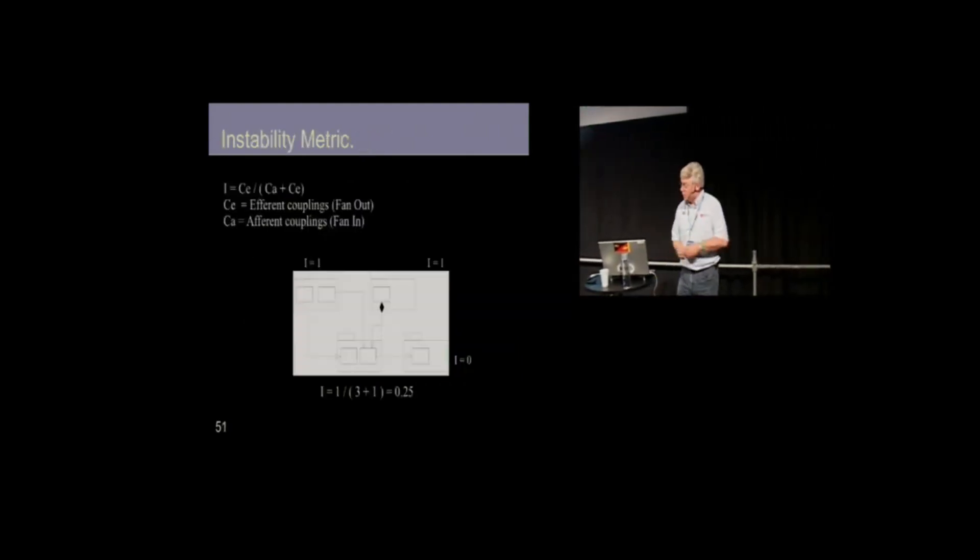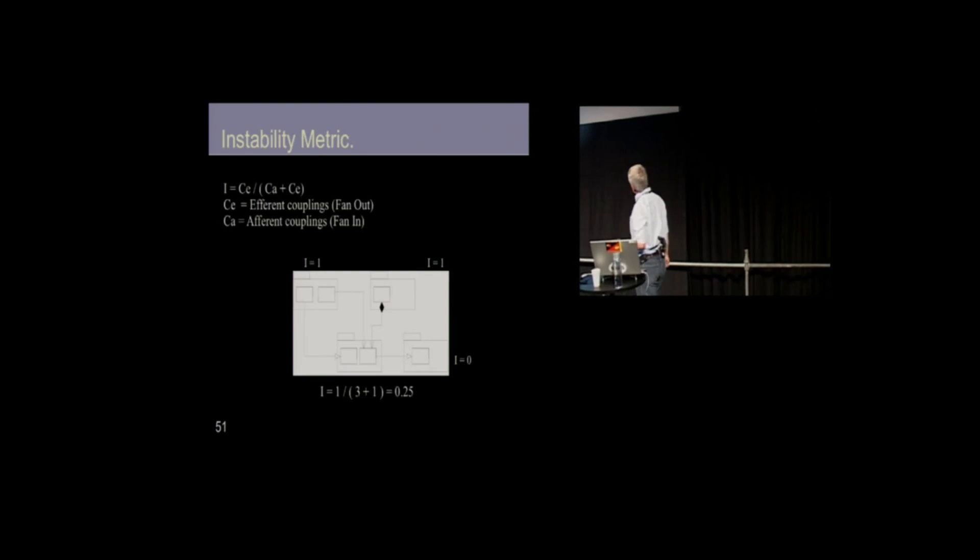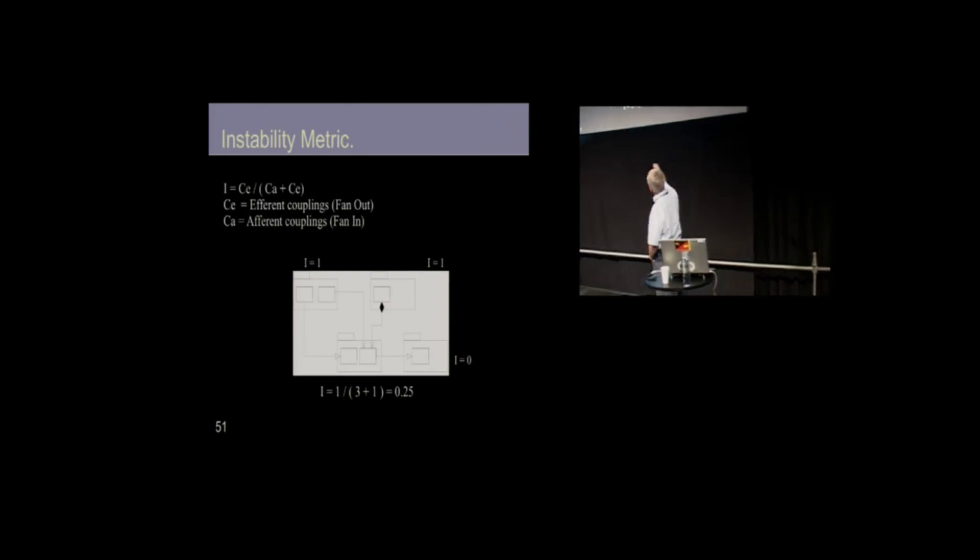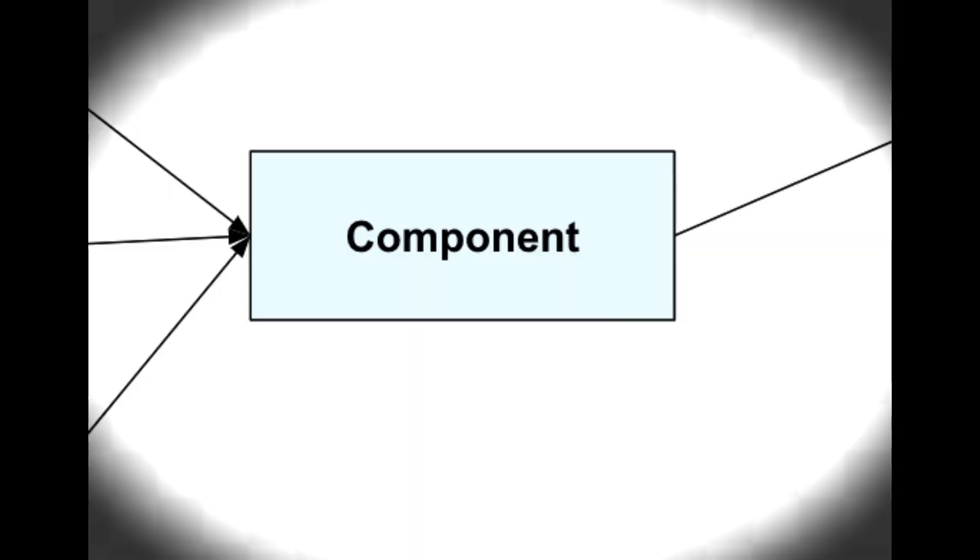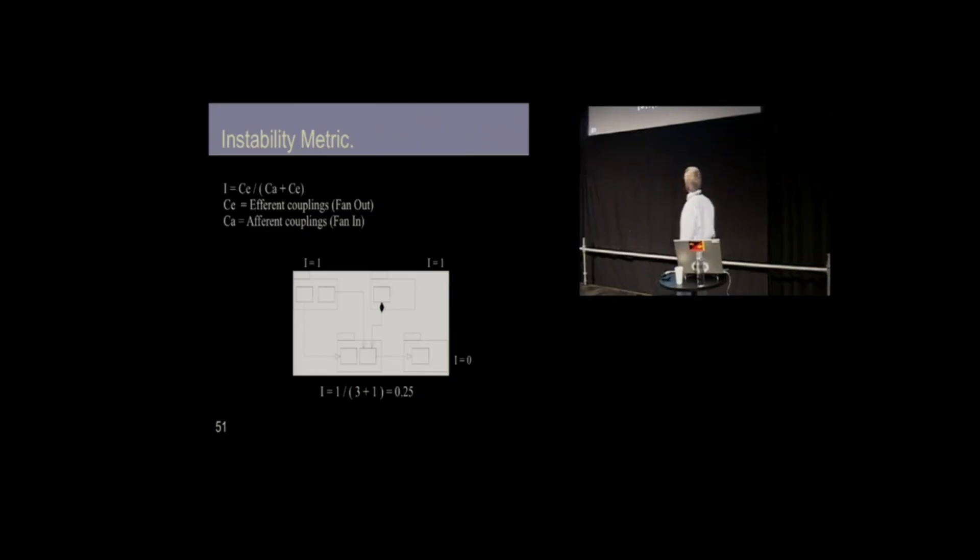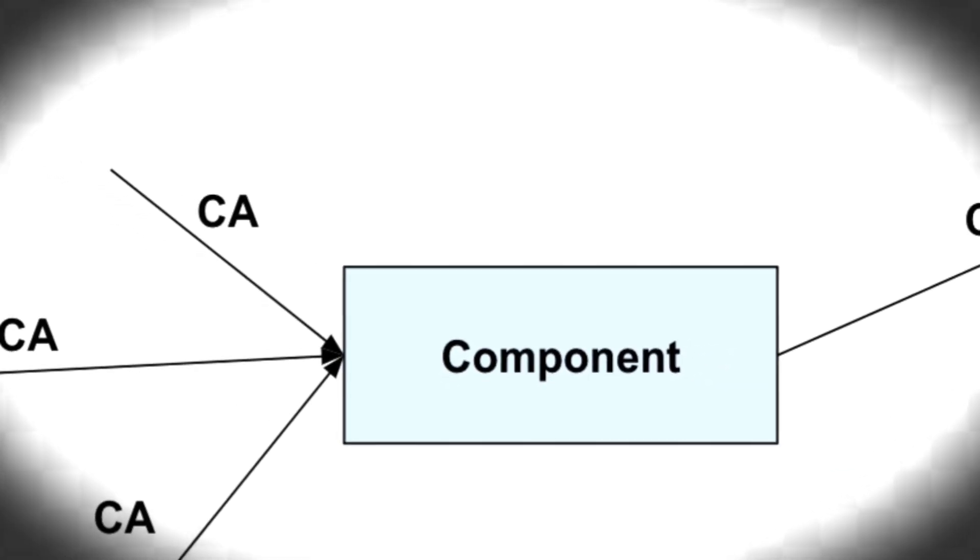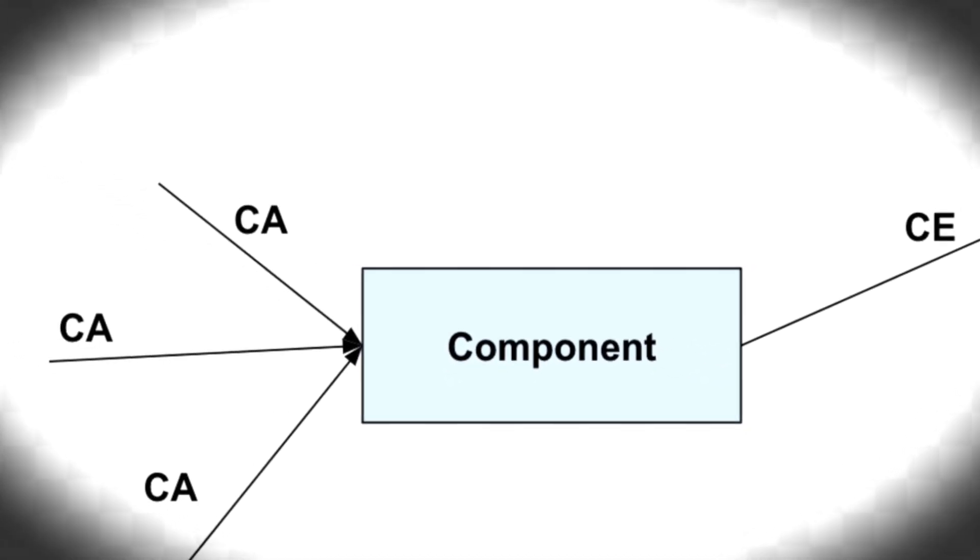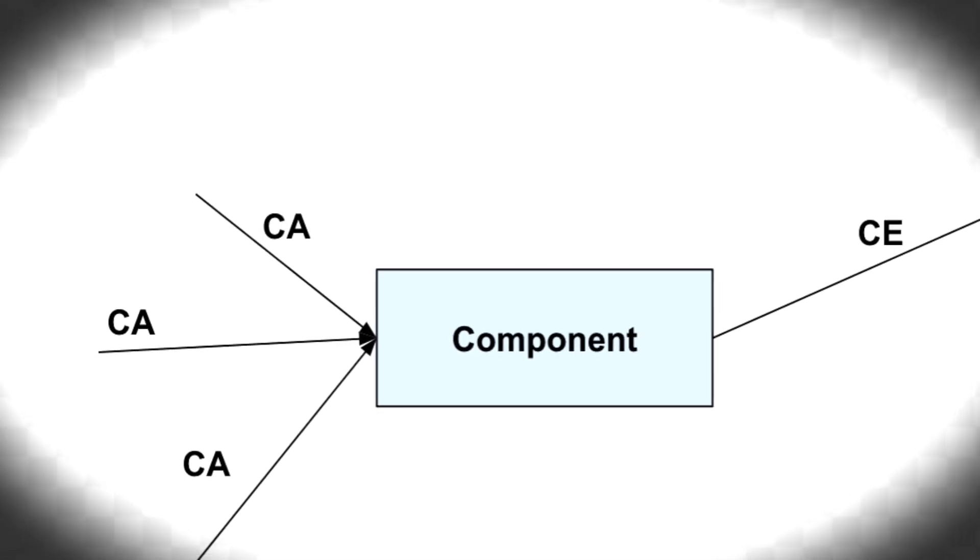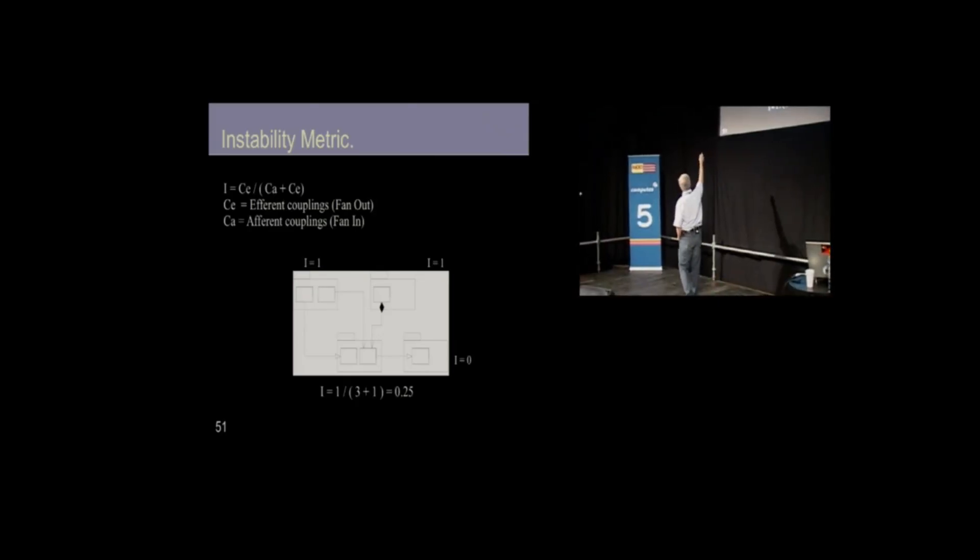We can actually measure this. We can put a number on it. We can say, okay, this component right here has three incoming dependencies and it's got one outgoing dependency. The incoming dependencies we could call CA for afferent couplings. The outgoing dependencies we could call CE for outgoing dependencies. And we can come up with this interesting number I.